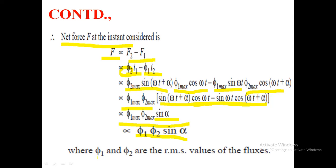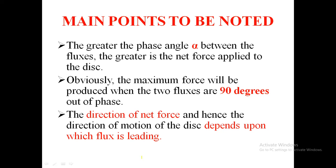Here φ1 and φ2 represent the RMS values of the respective fluxes. Key points to note: the phase angle α between the fluxes determines the net force applied to the disk. Maximum force is produced when the two fluxes are 90 degrees out of phase. The net force is F proportional to F2 − F1, and the direction of motion of the disk depends on which flux is leading.